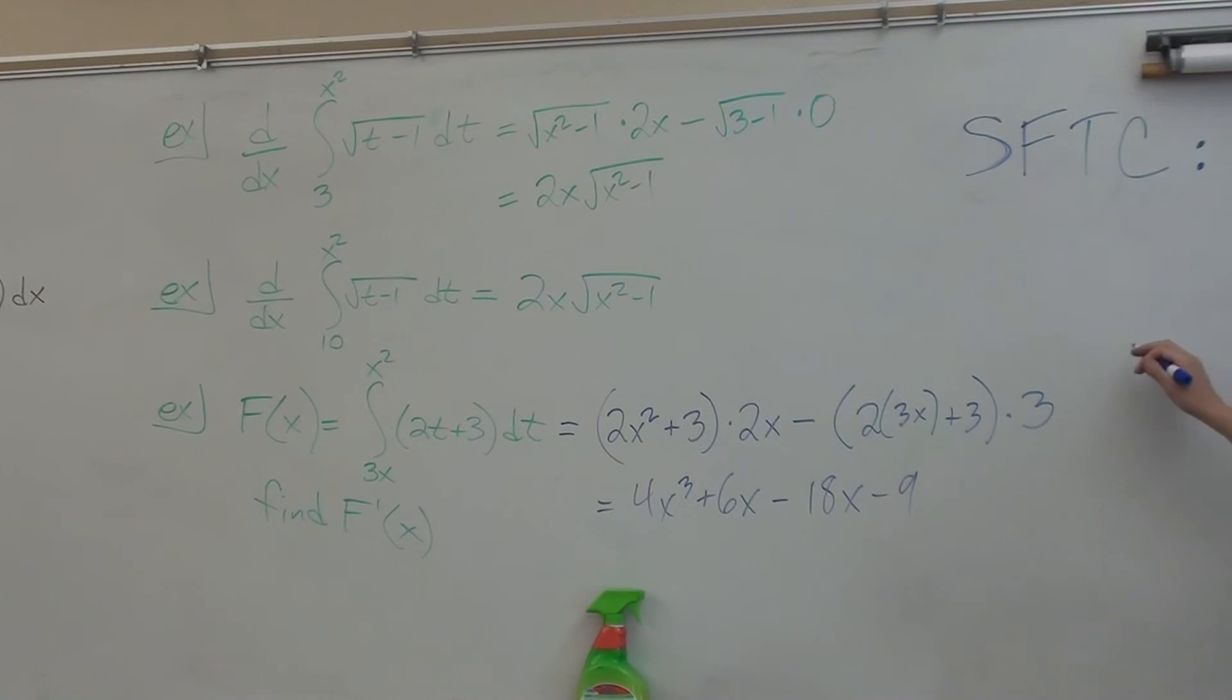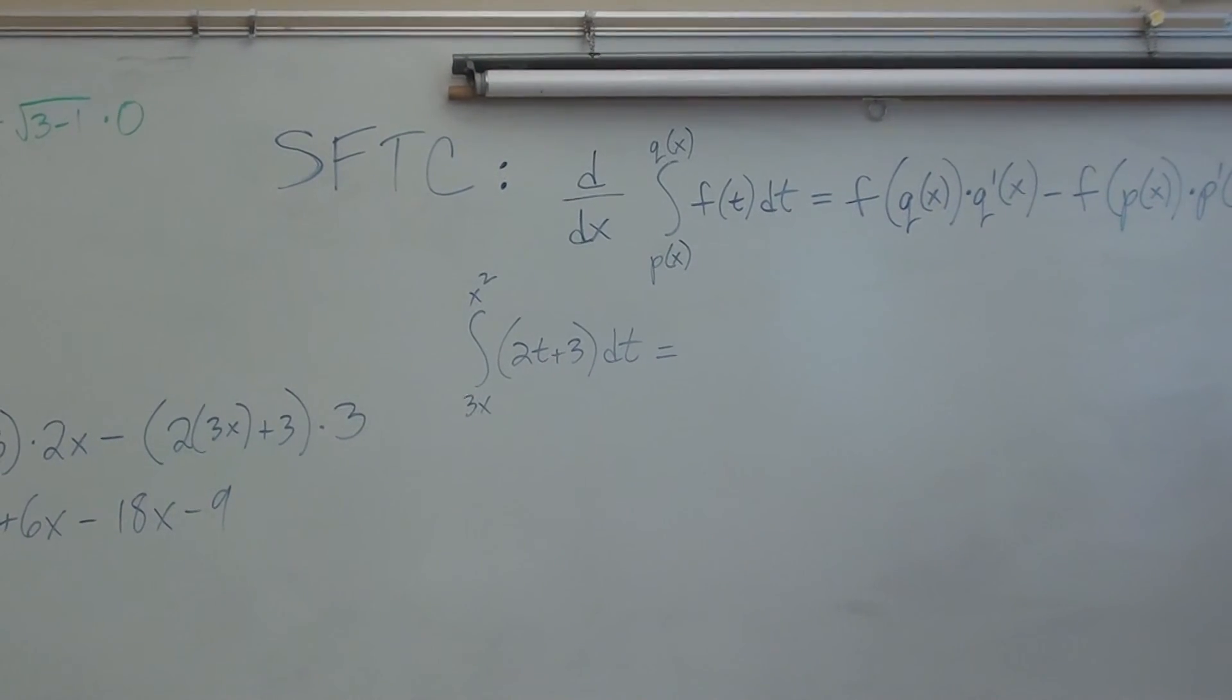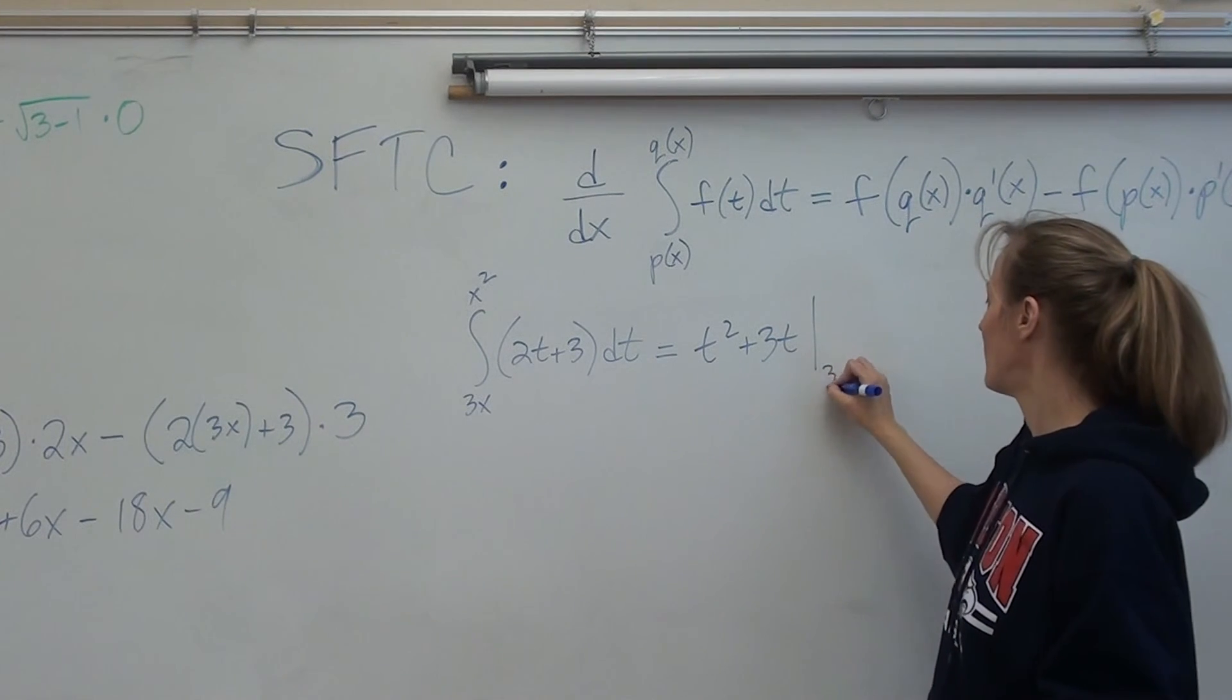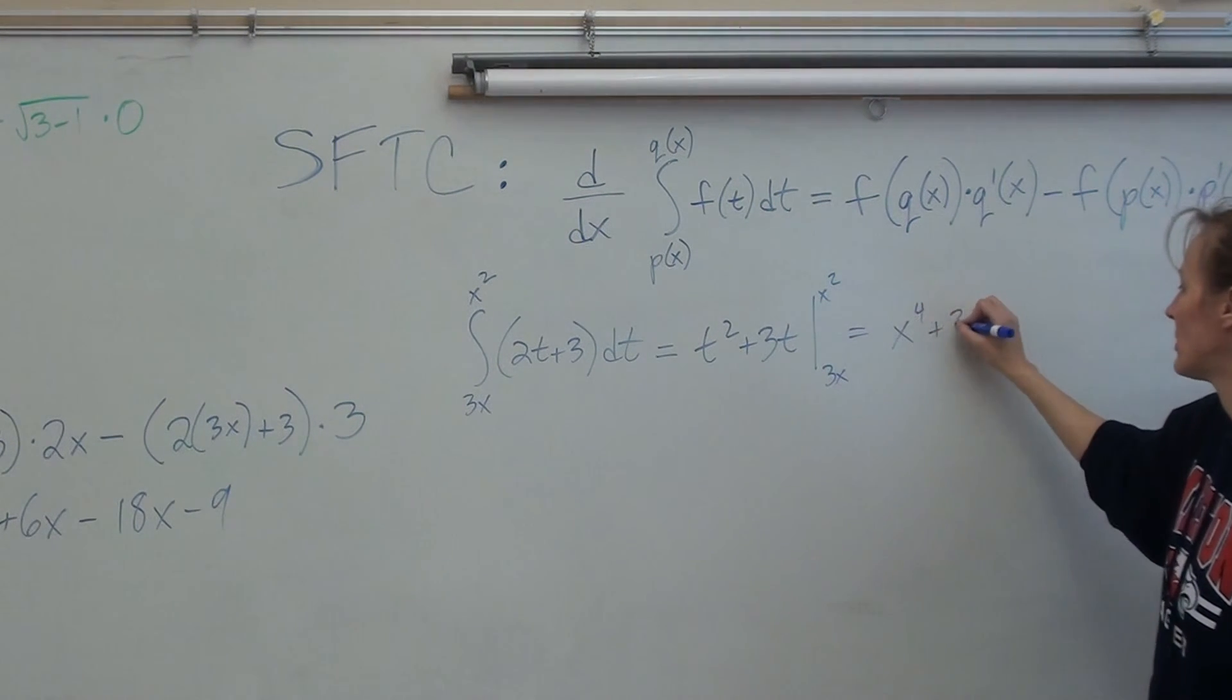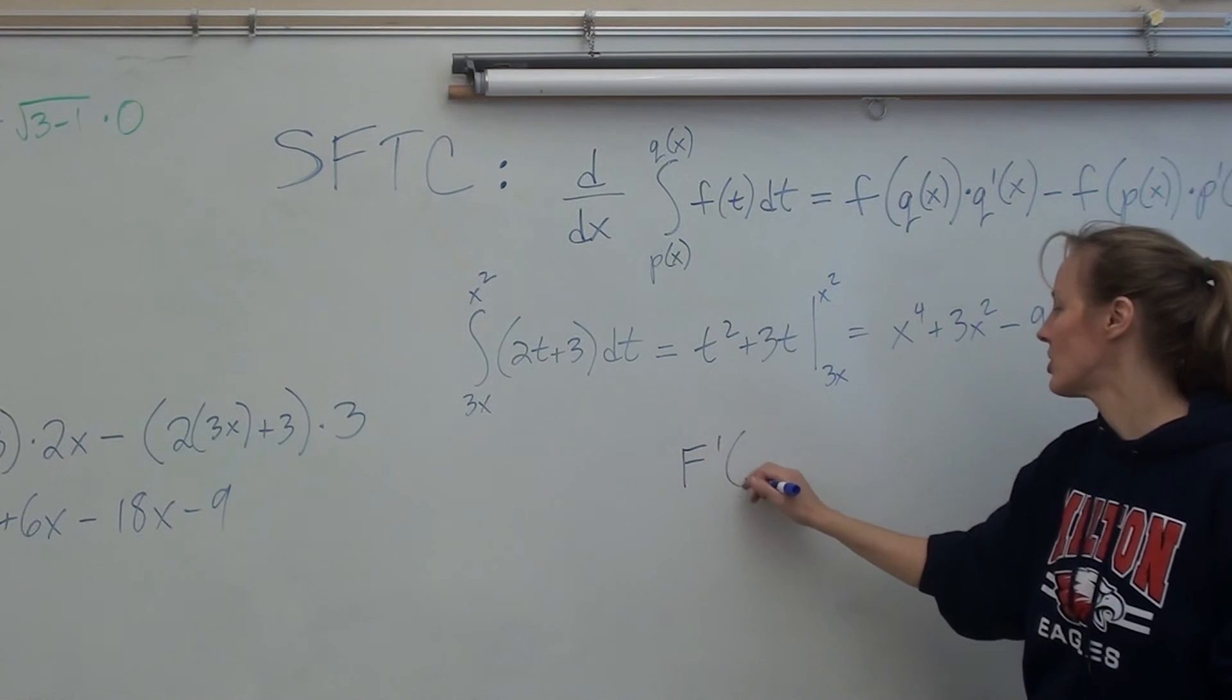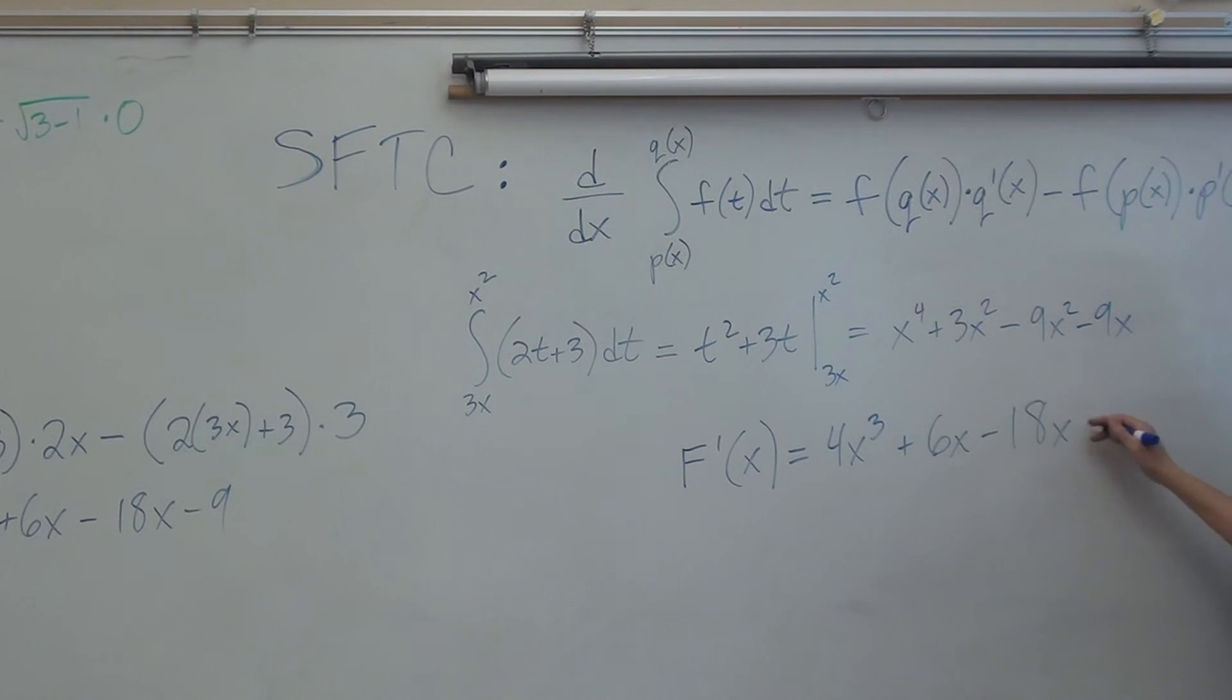Your book might also ask you to do this same problem the long way. So if we were to do this the long way, here's what you'd have to do. So if you use the old-fashioned techniques, the ones that you already know, instead of the formula, you'd actually have to find the antiderivative. So you'd get T squared plus 3T evaluated from 3X to X squared. And you'd plug in your functions. So you'd have X to the fourth plus 3X squared minus 9X squared minus 9X. That would be your big F of X. We want F prime. So you'd have to take the derivative of this. It should be 4X cubed plus 6X minus 18X minus 9.